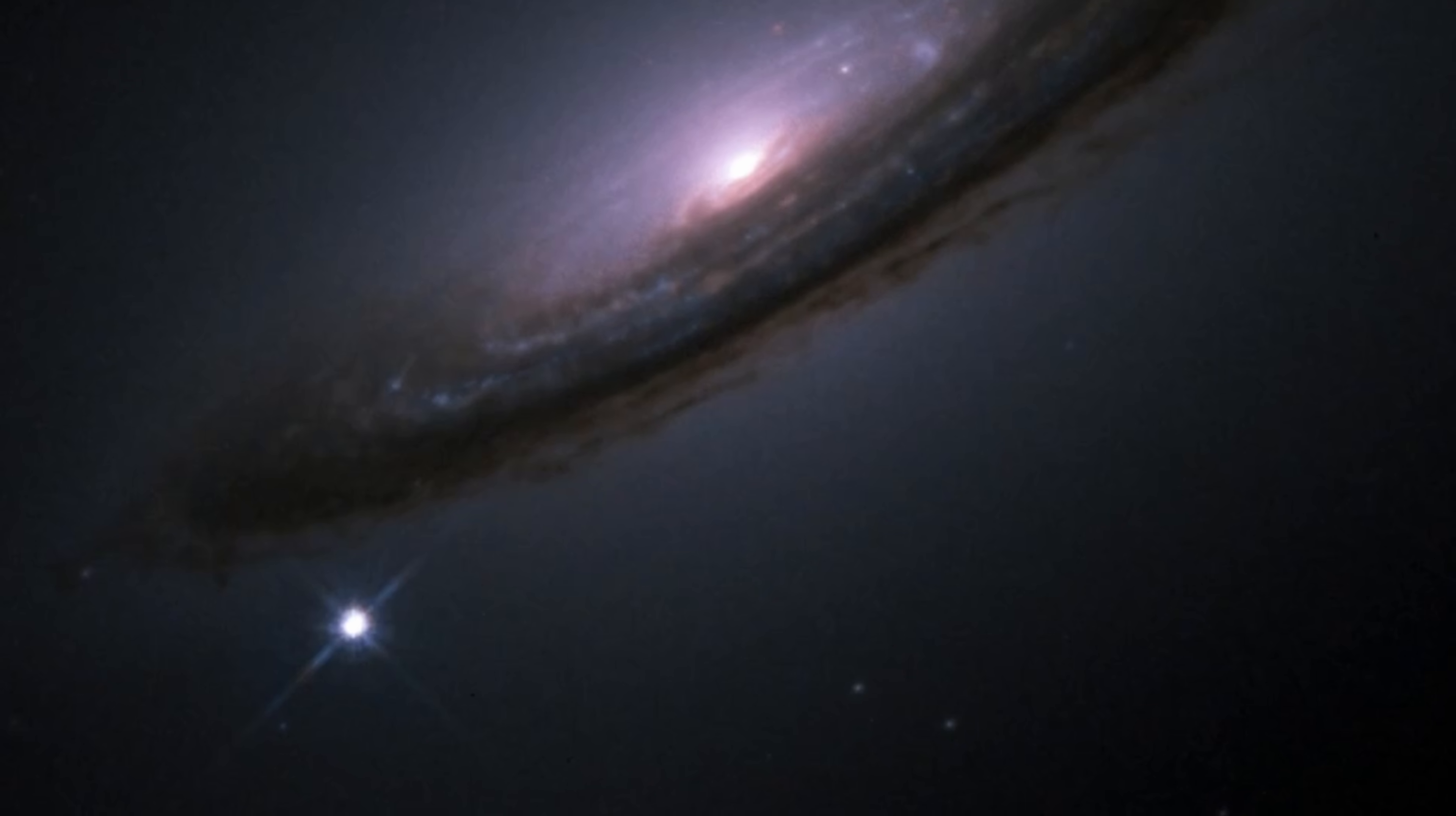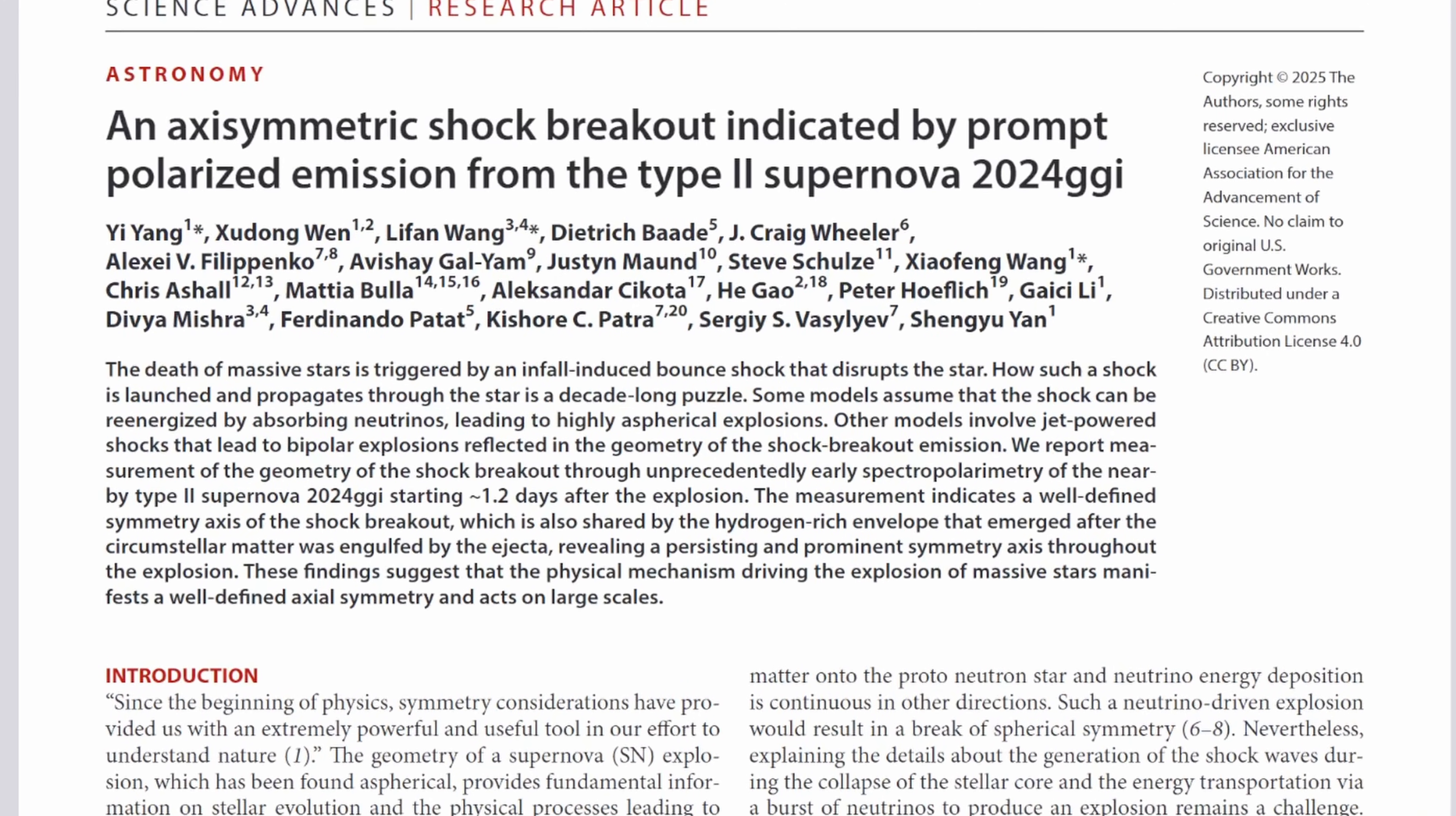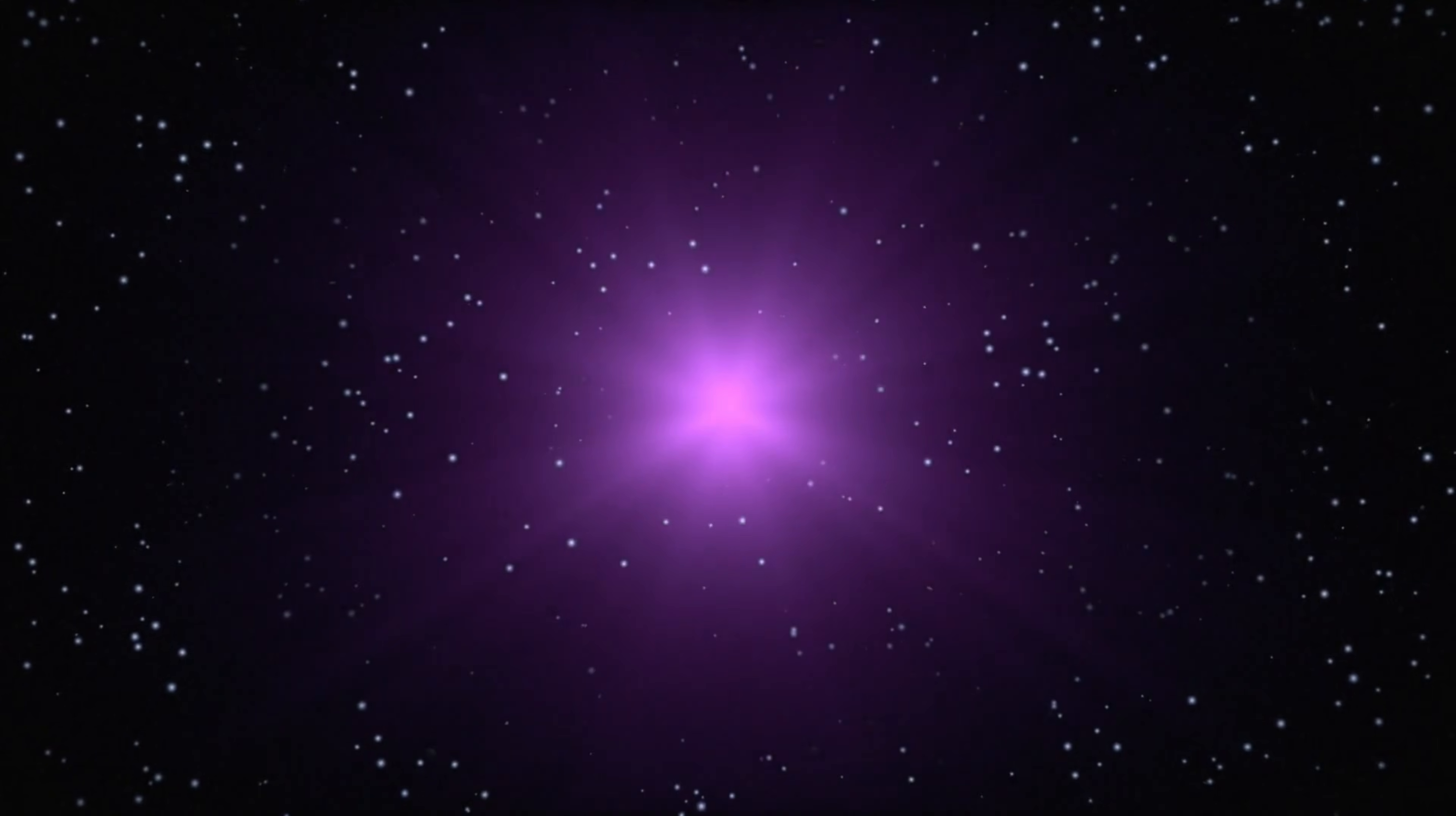Historically, observing the shape, especially in the first critical hours, was nearly impossible because supernovas are often way too distant and too small to resolve. Usually the best we get is supernova remnants that we observe years and years later. Just a few days ago, scientists released their first major discovery regarding what's known as a Type 2 supernova—a collapse and explosion of a massive star. This event, SN 2024 UGI, 22 million light years away, finally allowed scientists to see the shape.